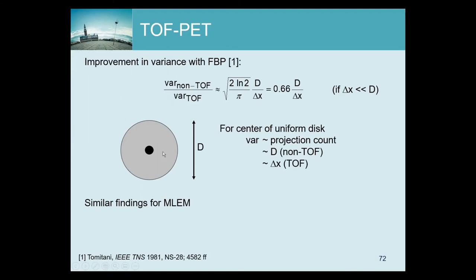This result is essentially independent of reconstruction algorithm. Since for a uniform cylinder all events crossing the center have the same attenuation and activity, they are all equivalent — so MLEM, which resembles weighted least squares, uses uniform weights and performs identically to unweighted least squares. The conclusion is therefore general, at least for the center of a cylinder, and has been verified with MLEM giving the same gain. Furthermore, comparing two different TOF resolutions, the D cancels and the TOF variance is simply proportional to the TOF kernel width — wider kernel, higher variance.